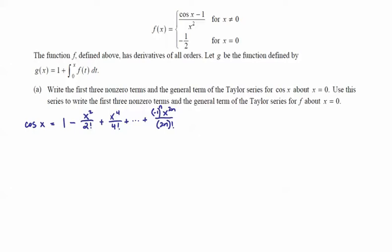So that is the first three non-zero terms and the general term of the Taylor series for cosine of x about x equals 0. Then we want to use this series to write the first three non-zero terms and the general term of the series for f about x equals 0. All right, so this time we can do this in stages.